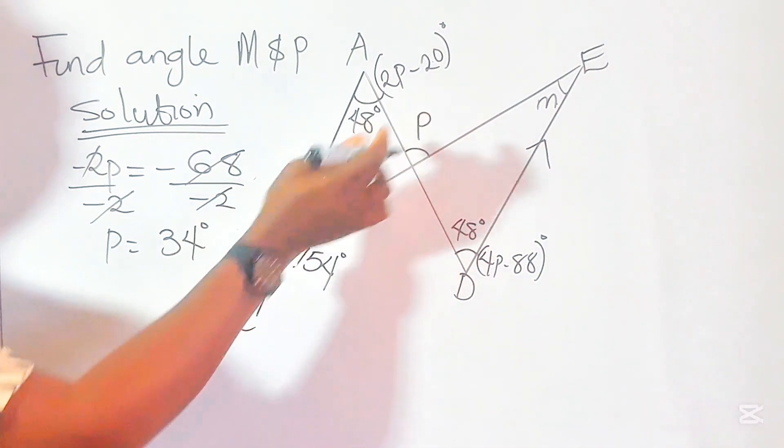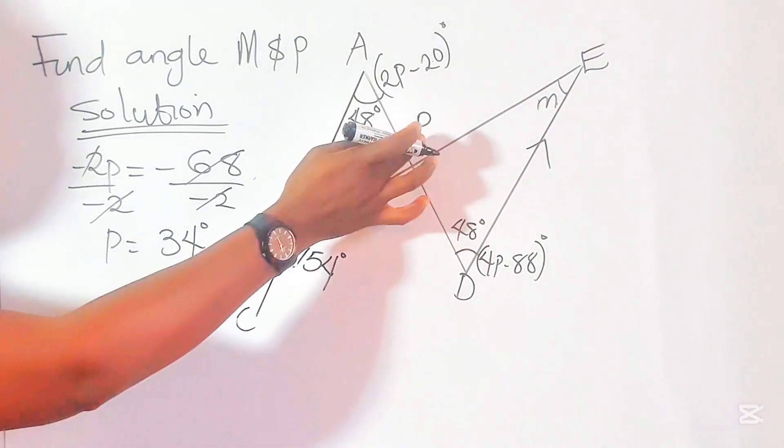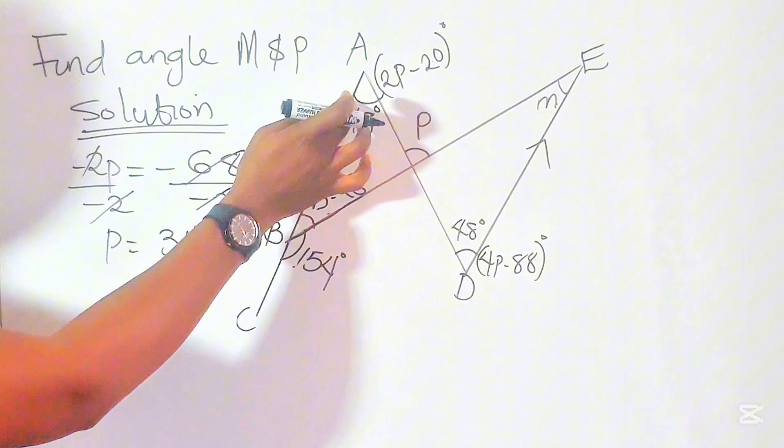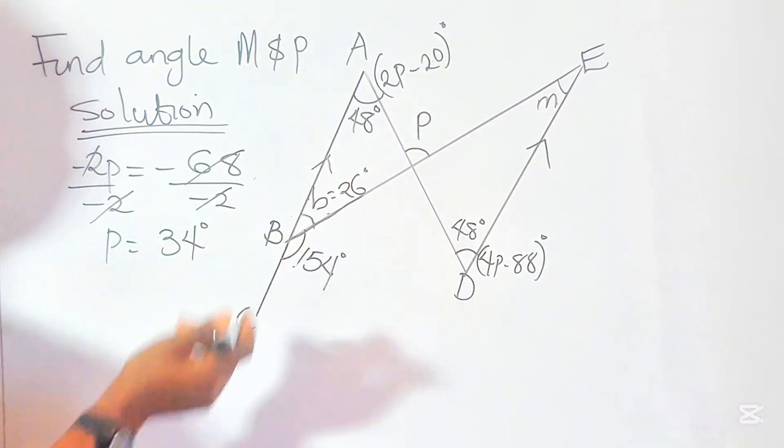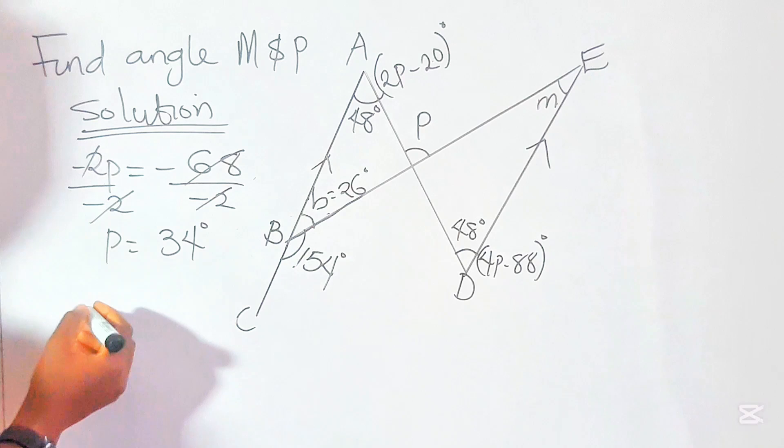Now we can find P using the exterior angle theorem. This angle P here is an exterior angle to angle 48 degrees and 26 degrees. Because it's equal to the sum of these two interior angles, therefore...